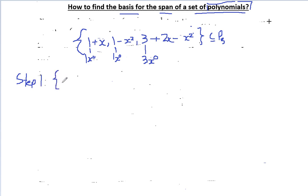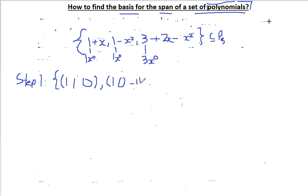Step 1: think of these as row vectors. The polynomial goes up to x squared, so we have coefficients for x0, x1, and x squared. So the first row vector is [1, 1, 0], the second is [1, 0, -1], and the third is [3, 2, -1].